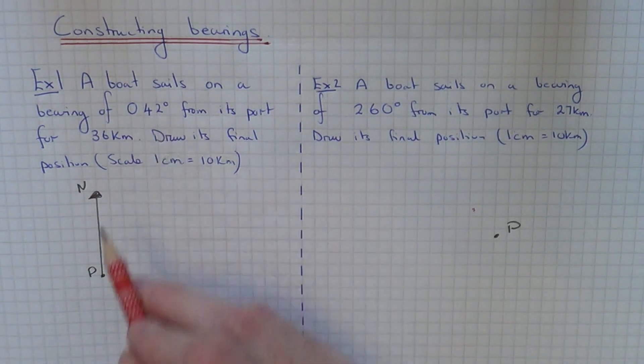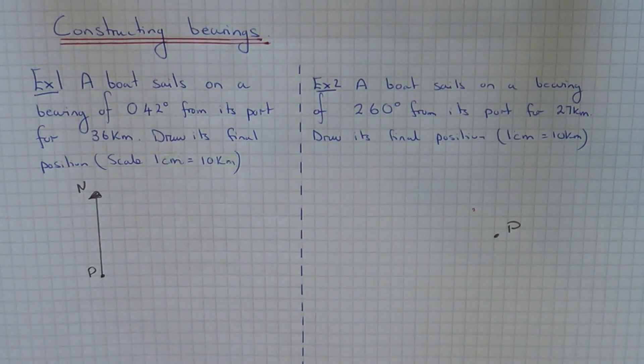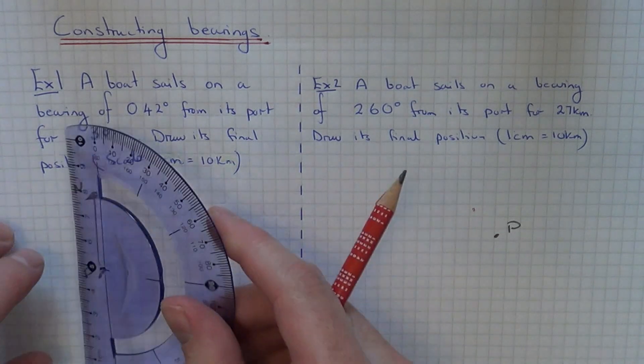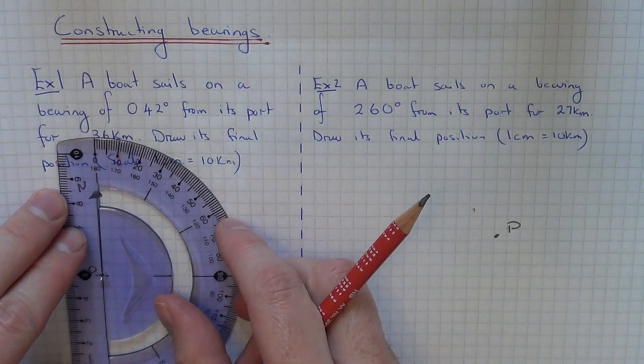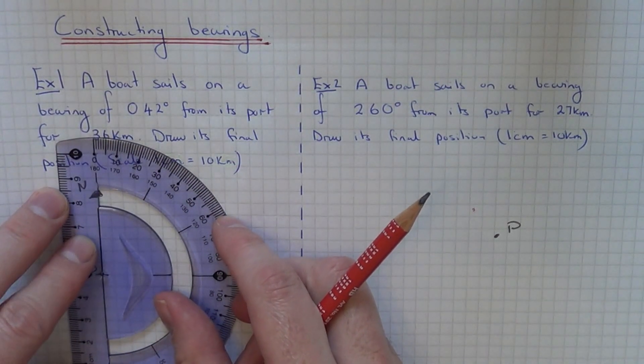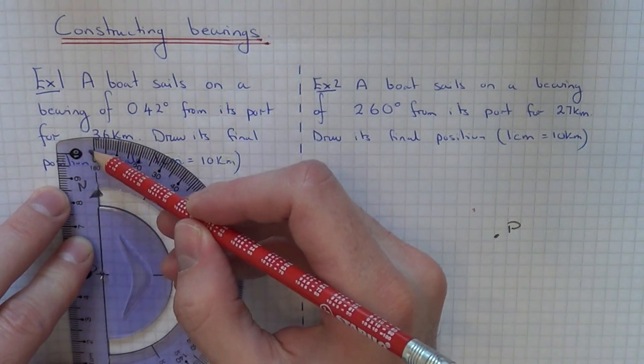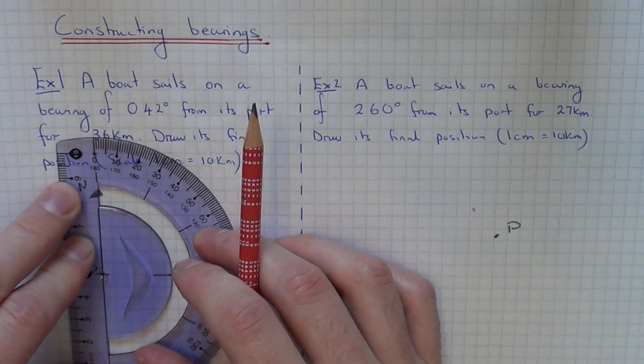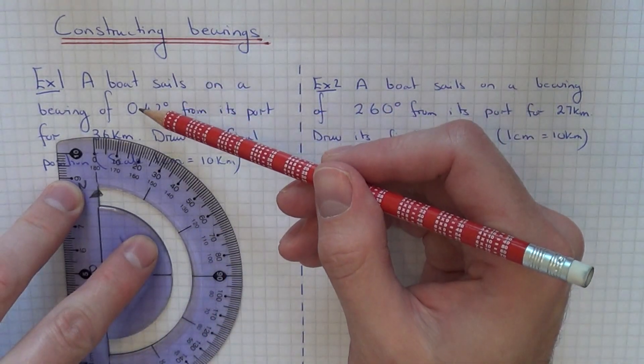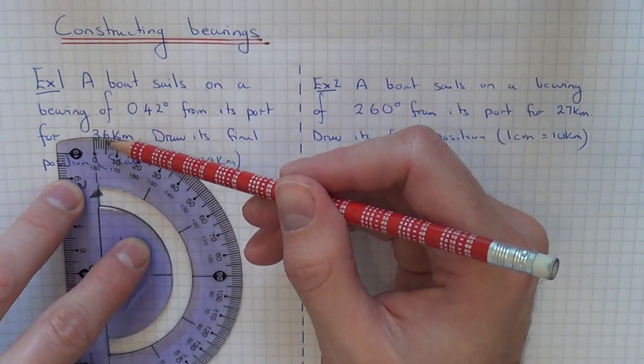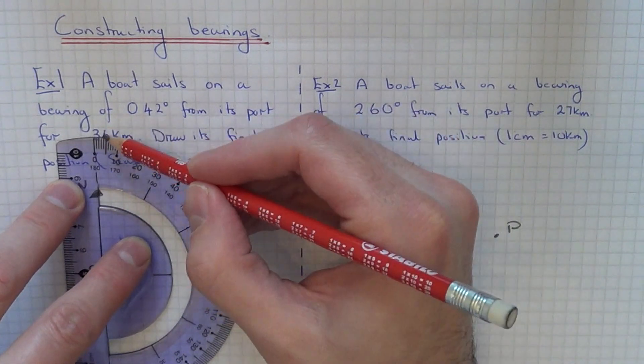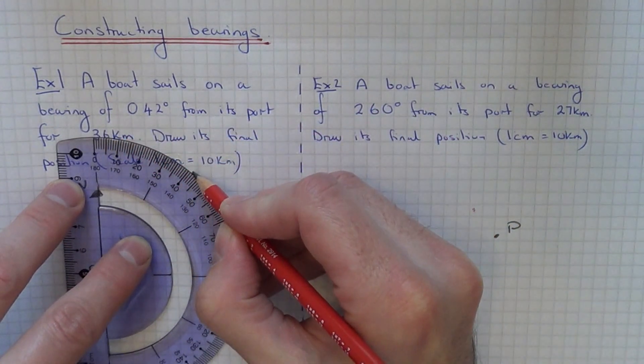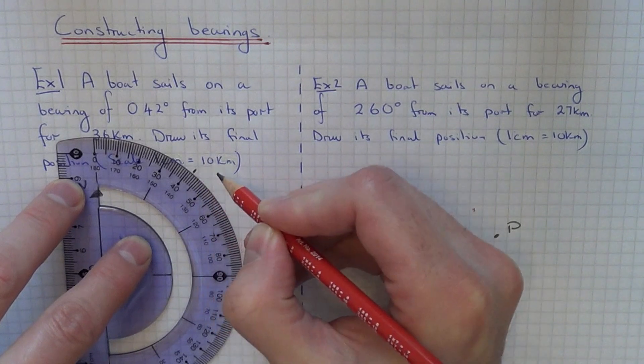The bearing which we have to measure is 042 degrees. Put your protractor vertically onto your north line. We've got 0 on the north line, and we need to measure an angle of 42 degrees. I've just marked this out, so put a little marker here.